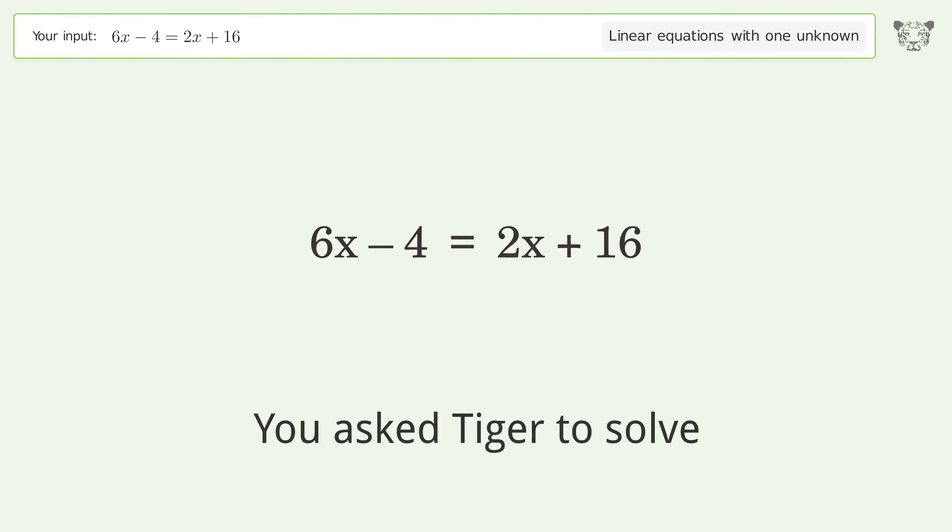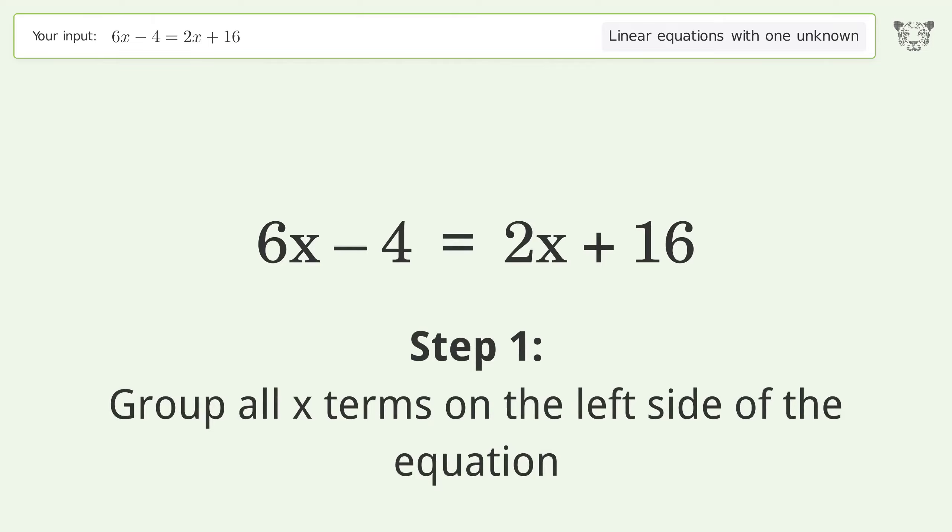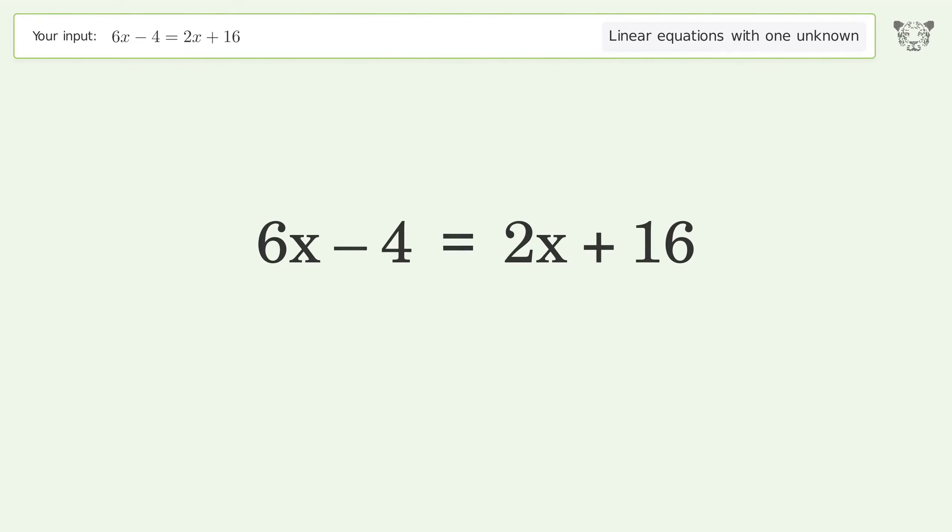You asked Tiger to solve this. It deals with linear equations with one unknown. The final result is x equals 5. Let's solve it step by step. Group all x terms on the left side of the equation. Subtract 2x from both sides and group like terms.